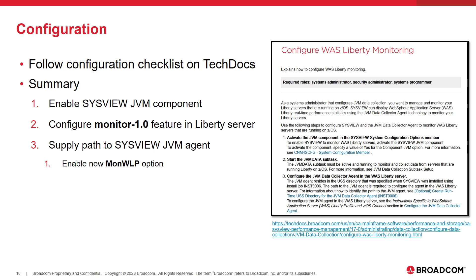It is simple to configure SysView monitoring for WAS Liberty. On our TechDoc site, there is a configuration checklist that details all of the necessary steps. On the right side of this slide, you can see a screenshot and link to the configuration checklist. A quick summary includes first enabling the SysView JVM component, then configuring the Monitor Liberty feature in the Liberty server, and finally supplying the path to the SysView JVM agent in the Liberty server. This includes enabling a new MonWLP option in the SysView JVM agent. Now let's hop into SysView and see how to take advantage of SysView's WAS Liberty monitoring.